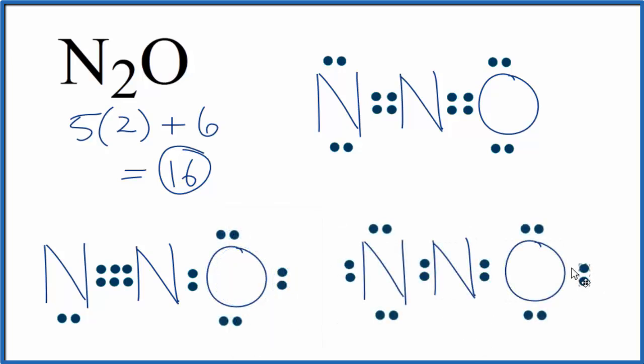Finally, we could have made a triple bond between the nitrogen and the oxygen here. And this works too. Octet, octet, octet, still using just 16 valence electrons.